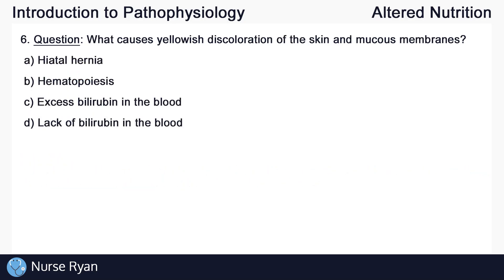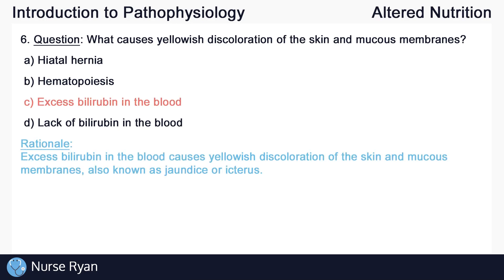Question number six: what causes yellowish discoloration of the skin and mucous membranes? The answer is C, excess bilirubin in the blood. Excess bilirubin in the blood causes yellowish discoloration of the skin and mucous membranes, also known as jaundice or icterus. Jaundice is often caused by problems affecting the liver.